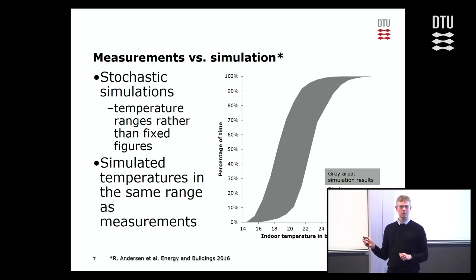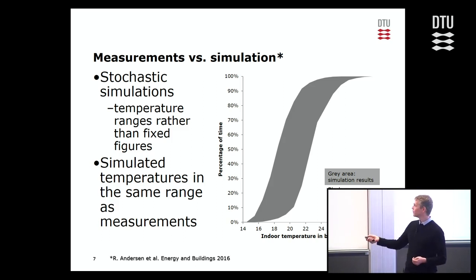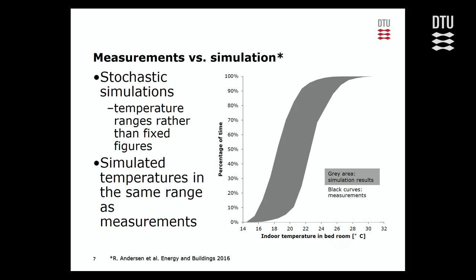Since these were probabilities of an event occurring, we used stochastic simulation - so instead of getting one temperature in each time step, we got a probability distribution of temperatures. That's why the result is not just one curve as in a normal simulation, but an area of simulation results. The measurements are shown here. One of the apartments was not captured by the simulations, but in four of them the majority of the temperature measurements actually coincided with the simulations.